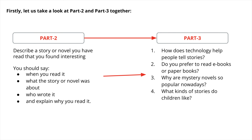Now here is the connection between part 2 and part 3. If you look at part 2, it is the cue card which is talking about a story or novel that you have read and found interesting. There are 4 bullet points which you would be developing in your answer. Just look at the part 3 questions — they completely depend on stories, books, or what kind of stories children like. So here are 4 questions which are interconnected with part 2.